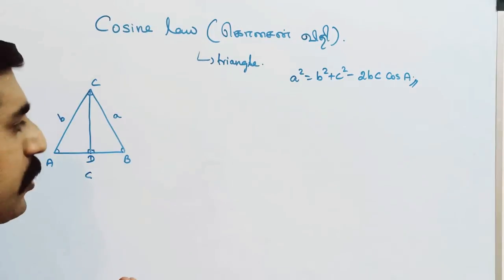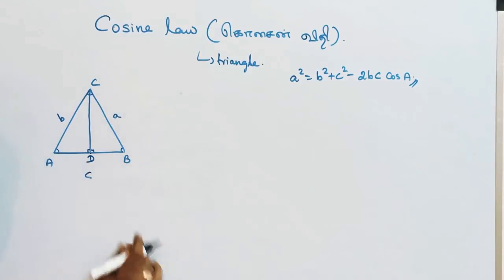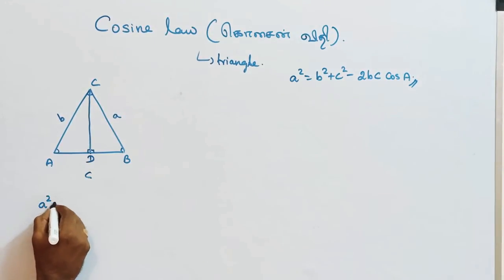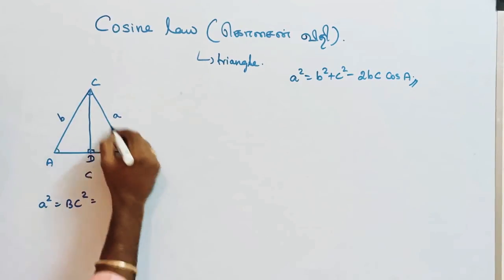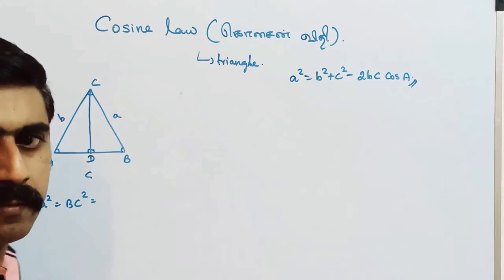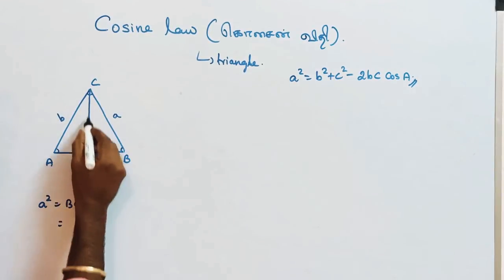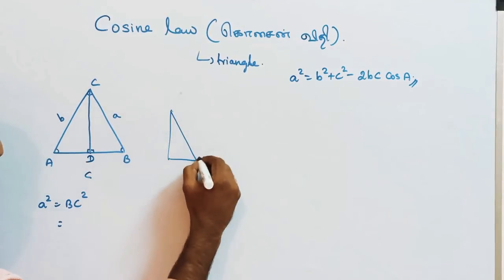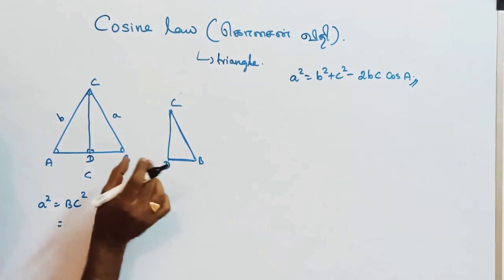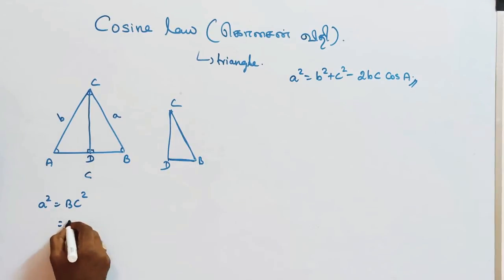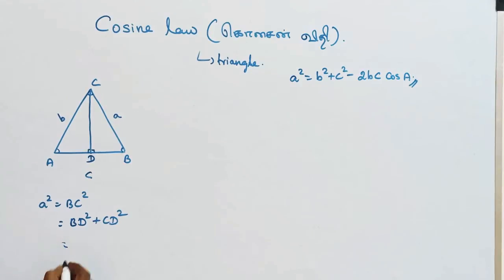This foot of the perpendicular is point D. Now, applying the Pythagorean theorem to triangle BDC: the longest side squared equals the sum of the squares of the other two sides. So a² = BD² + CD², and BD² = BC² − CD².